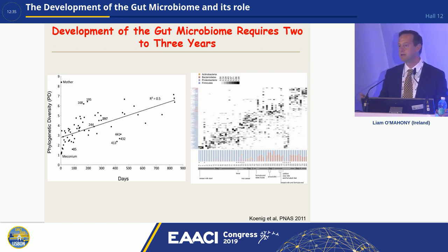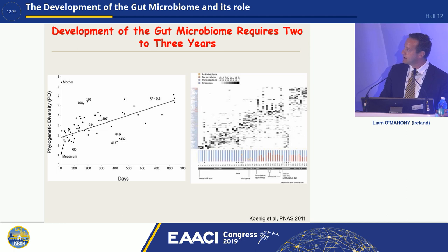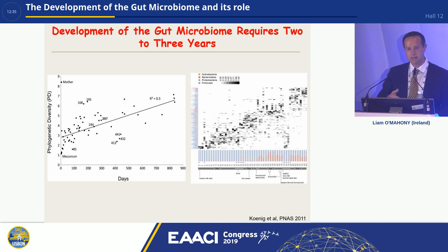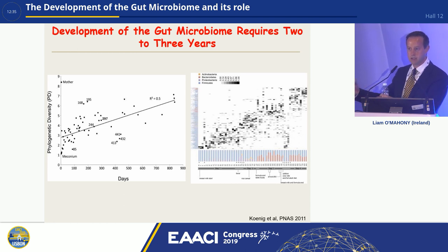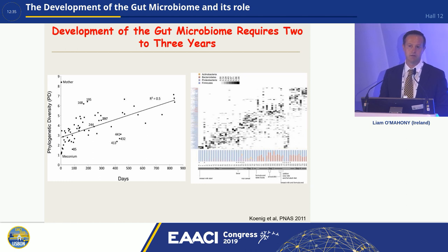Some time points are associated with, for example, post-antibiotic use — you can see there's an effect, but the microbiome catches back up again. The right-hand side shows the same data differently, looking at the actual bacteria present. What you see is a succession of different bacteria coming in at different times over the first couple of years of life. So it's not just that diversity increases — the types of bacteria also change over this time period, and this is primarily driven by diet.